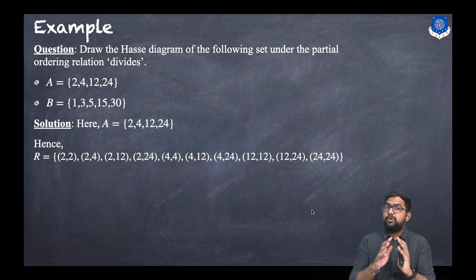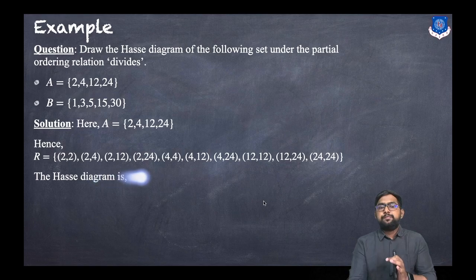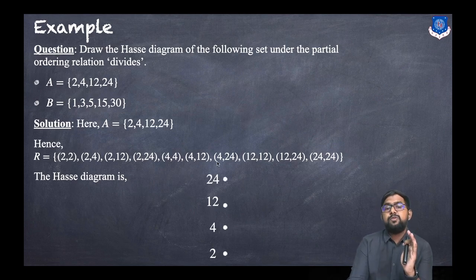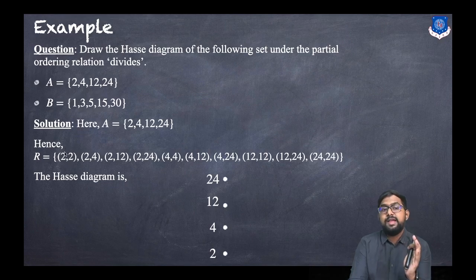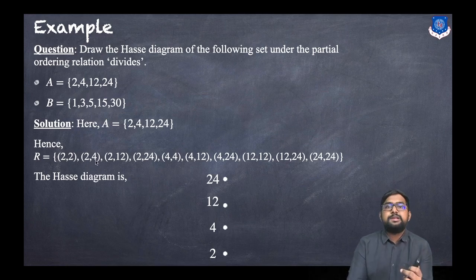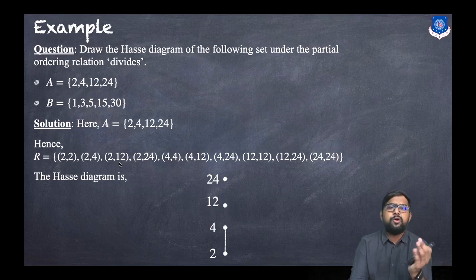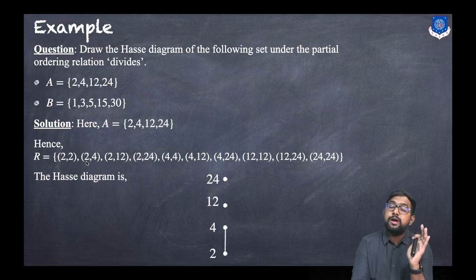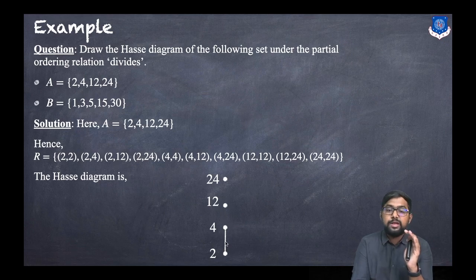In this example we will directly draw the Hasse diagram without constructing a digraph. Take all points: 2, 4, 12, and 24. Self-loop pairs are removed. For pair (2,4): is it a transitive edge? No, so it is included. For pair (2,12): since 2 is related to 4 and 4 is related to 12, this is a transitive edge — so (2,12) is removed. Similarly (2,24) is transitive via 4 or 12, so it is removed.